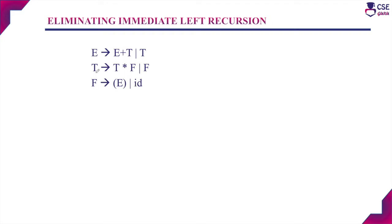Considering the first production E derives E plus T, the first symbol on the right hand side is capital E, which is the same as the left hand side variable. So this production is left recursive — specifically a case of immediate left recursion, since the left recursion appears directly as the first symbol.